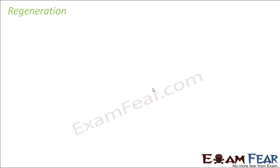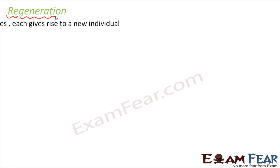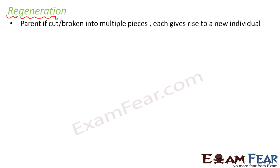Now let us look at another process of asexual reproduction: regeneration. 'Re' means again, and 'generation' means to produce something — so regeneration means producing something again. If the parent is cut or broken into multiple pieces, each piece gives rise to a new individual. However, even though it is classified as a mode of reproduction, this is actually an accidental process. The organism does not wait for somebody to come and cut it into pieces — it does not happen on its own. So we can say it is not quite the same as reproduction, as an organism will not wait to be cut in order to reproduce.